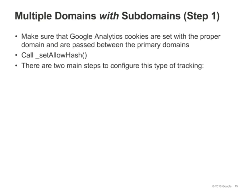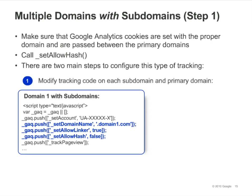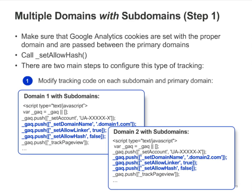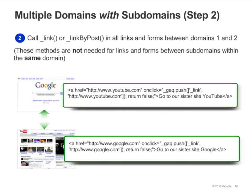If you want to track across both multiple domains and subdomains, you'll need to ensure that the analytics cookies are set across the subdomains and that the cookies are being passed between the parent domains. There are two steps. For the first step, add the lines of code shown in blue to the Google Analytics tracking code on every page of domain 1 and each of its subdomains. Make sure that setAllowLinker has an argument of true and setAllowHash has an argument of false. Then, add the same code to each page of domain 2 and each of its subdomains, but with a different argument to setDomainName. For step 2, call link or linkByPost in all links and forms that cross between the two parent domains. For example, the code shown in the slide shows how you'd do this to track across google.com and youtube.com. Note that you don't need to use link or linkByPost in links between subdomains within the same domain. You should create separate profiles in your account for each primary domain and/or each subdomain, using an include filter based on the hostname field.